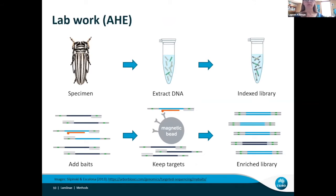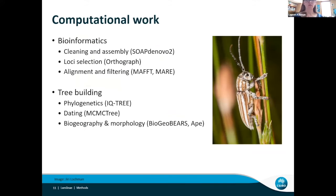To get a phylogeny, I needed sequence data. This is a simplified workflow of anchored hybrid enrichment, a method for selectively sequencing genetic data from particular nuclear loci. We start off with the beetle, extract the DNA, build up the library, and then perform the target capture. The bait sequences correspond to particular nuclear loci that we want to sequence — they bind to matching beetle DNA, we pull it out with magnets and amplify it, giving us a library enriched for our target loci. Then computationally, we take raw sequencing reads and turn them into a clean alignment to estimate the phylogeny.